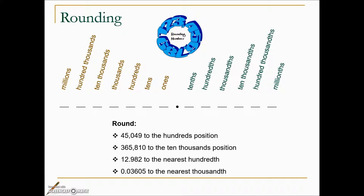Here are some examples of rounding numbers. This first one asks us to round to the hundreds position, so we've underlined the hundreds. Immediately to the right is a four. This is not a large enough number to alter our digit, so we will call this 45,000.